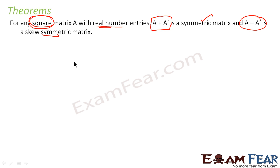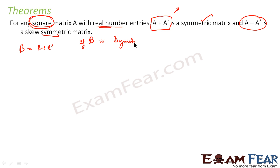To prove this, let B be a matrix whose value is A plus A dash. I am trying to prove the first part first. If I have to prove B is symmetric, then B transpose will be equal to B. What I am saying is that B equals A plus A dash, and if B is a symmetric matrix, then B transpose will be equal to B. If you can prove this, that means A plus A dash is a symmetric matrix.